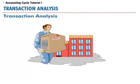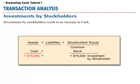We will now use the accounting equation to analyze a series of transactions for a computer programming service called SoftBite. The cause of any change to stockholders' equity will be labeled in the right-hand margin. On September 1st, stockholders invest $15,000 in cash in SoftBite. This results in an increase to cash of $15,000 and an increase to common stock of $15,000.